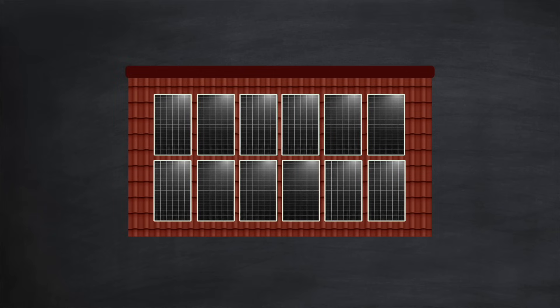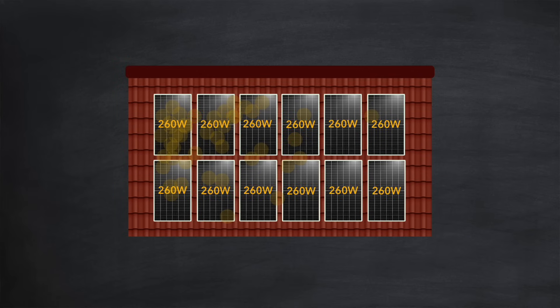Shading is certainly one of the main reasons people choose to have optimizers in their solar installations. But what are the other benefits? The accumulation of dirt over time can adversely affect array performance. In this example, you can see that over a year or two, dirt has accumulated towards the top left-hand side of the array. The dirtiest panel on the top left is now only able to output a maximum of 260 watts. If all the panels are connected to a string inverter without optimizers, for the same reasons we saw with shading, the maximum power output on each of the other panels would also be limited to 260 watts. However, if optimizers are fitted, they will ensure that each panel is able to output at its maximum level, despite the dirt.